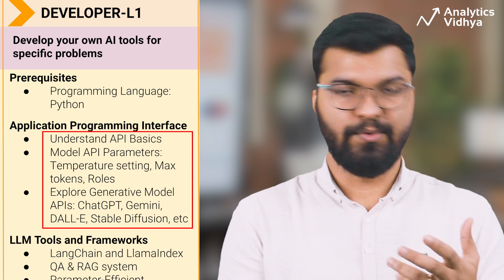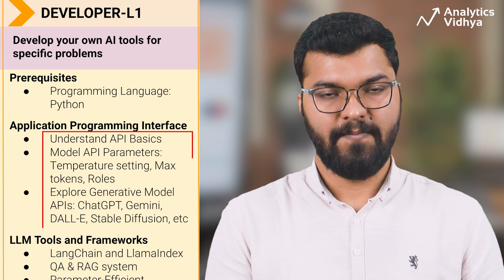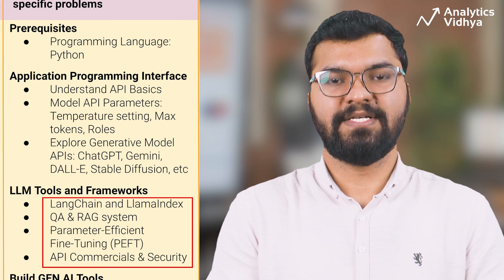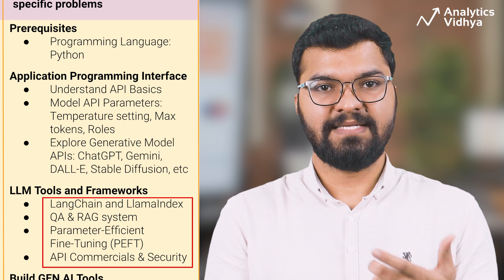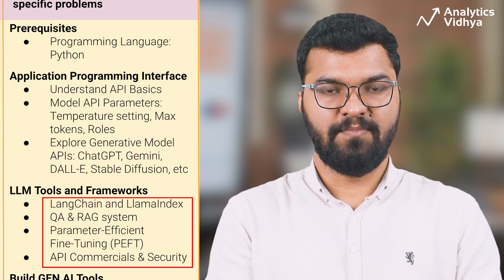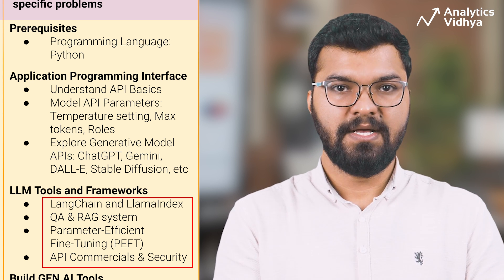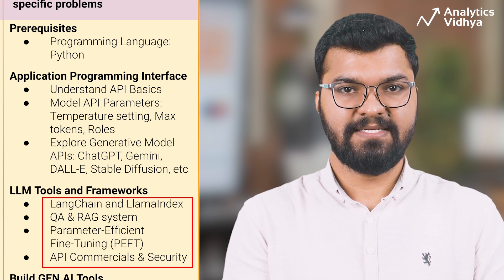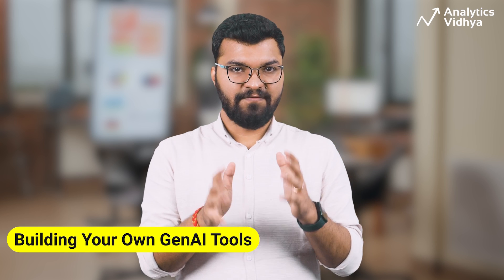Explore the APIs of popular generative models like OpenAI's ChatGPT, Google's Gemini, and DALL-E 3, or open-source models like Falcon, Meta's LLaMA, or Stable Diffusion. Then master LLM tools and frameworks like LangChain and LlamaIndex to build your own QA systems and retrieval-augmented generation (RAG) systems. Also learn parameter-efficient fine-tuning (PEFT). Be aware that most APIs have usage limits, commercial implications, security considerations, and error-handling requirements.